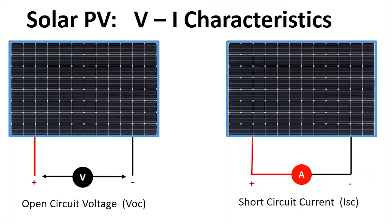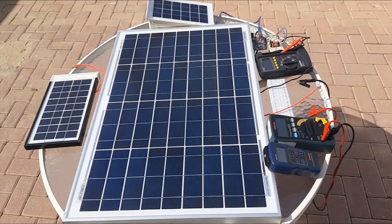Solar PV voltage-current characteristics. If you measure the voltage without any load using a voltmeter, as shown on my left-hand side, it's called open circuit voltage. And next, without any load, if you short circuit the path through an ammeter, we measure the current — that is the maximum current, called the short circuit current or I short circuit. I am going to measure both the short circuit current and the open circuit voltage.